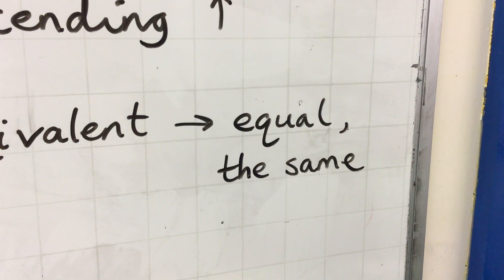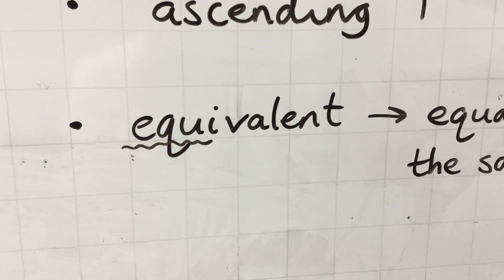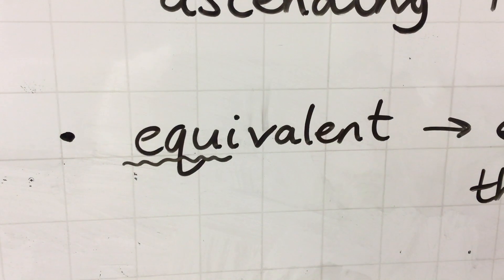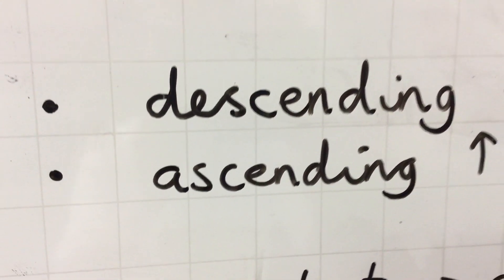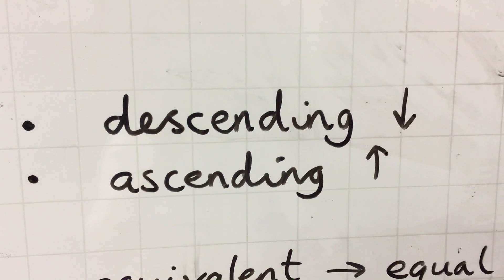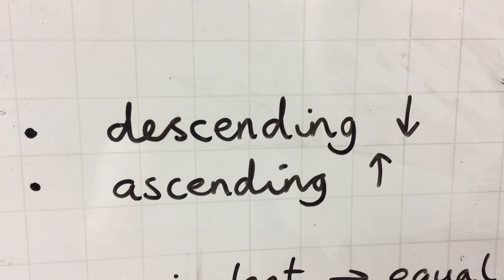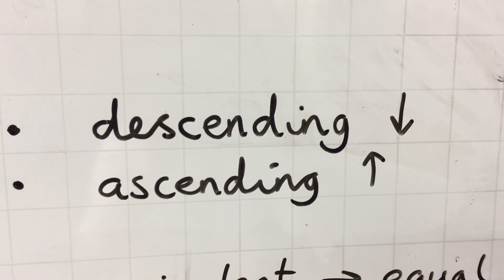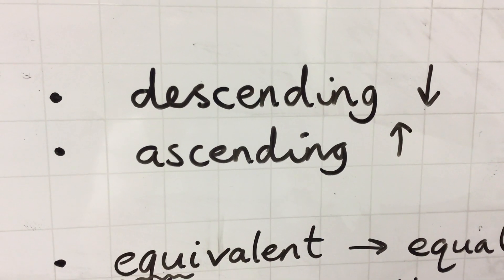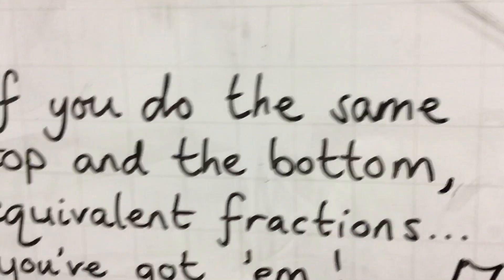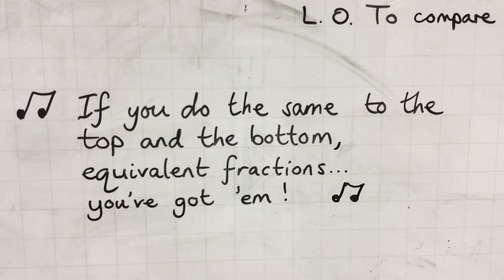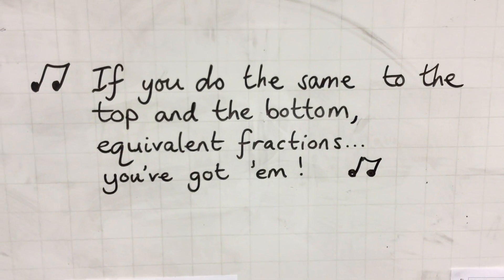Equivalent fractions are really helpful when we're comparing and ordering fractions. If fractions have different denominators, we might need to calculate equivalent fractions before we can order or compare them. Two really important words: 'descending' means going down — from greatest to smallest — and 'ascending' means going up — from smallest to greatest. Remember the rhyme: if you do the same to the top and the bottom, equivalent fractions you've got them.